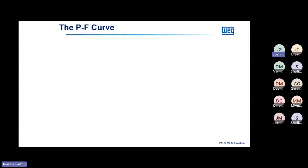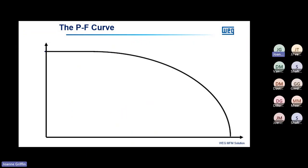In the next slide, I'm going to show you the PF curve — the prevention failure curve. Most of you are probably familiar with it. The horizontal axis represents operational hours and the vertical axis represents the health of your equipment. The curve goes down and touches the horizontal axis. With condition-based monitoring, we're trying to detect the point at which your curve approaches the horizontal axis, because while the machine is running on the horizontal axis, you can generate revenue.